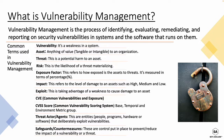'Threat' is a potential harm to an asset. 'Risk' is the likelihood of a threat materializing, and risk is actually defined by the formula: vulnerability times threat. 'Exposure factor' refers to how much an asset is exposed to a particular threat, measured as a percentage — for example, 5% or 10%.